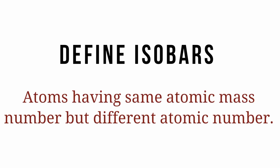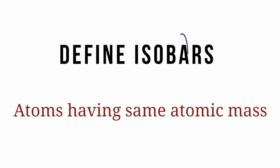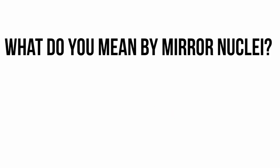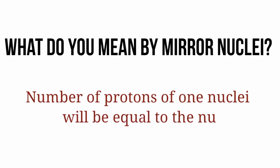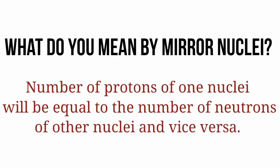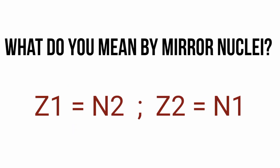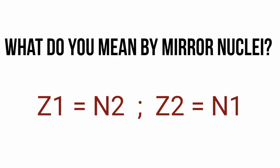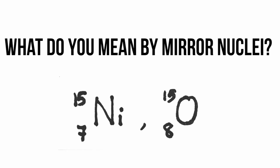Define isobars: atoms having the same atomic mass number but different atomic number, or simply atoms having the same atomic mass. What do you mean by mirror nuclei? In this case, the number of protons of one nucleus equals the number of neutrons in the other nucleus and vice versa: Z₁ = N₂ and Z₂ = N₁.